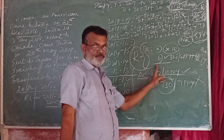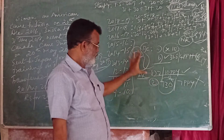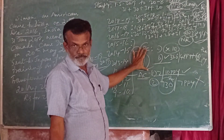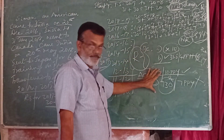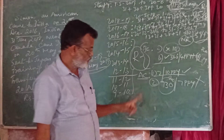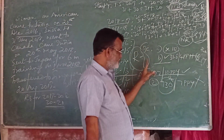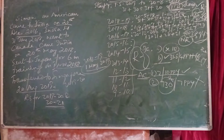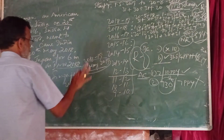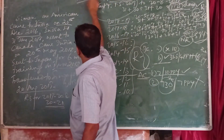If an individual satisfies only the basic condition without satisfying the additional conditions, then he is not ordinarily resident. If an individual satisfies the basic condition and both of the additional conditions, then he is called ordinarily resident. So for the previous year 2019-20 related to assessment year 2020-21, Mr. Simon is a not ordinarily resident.